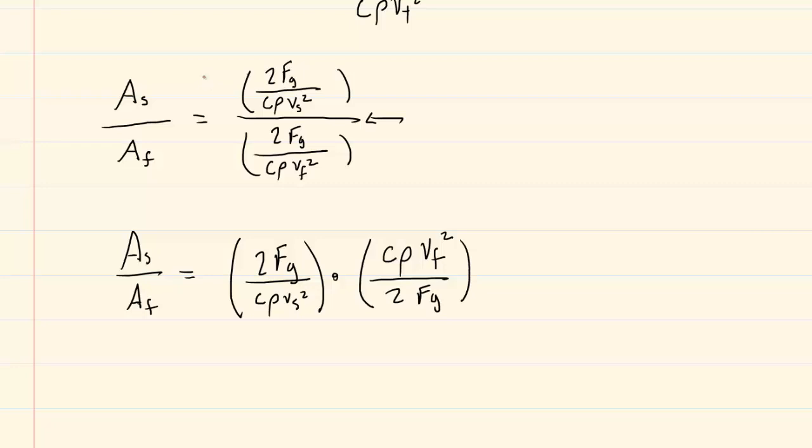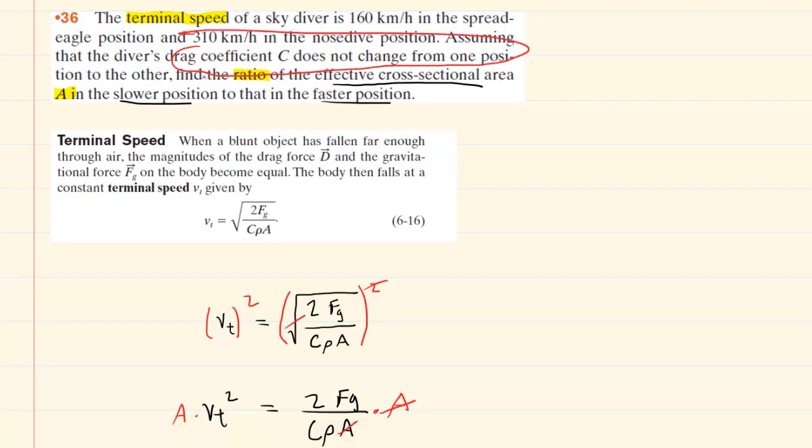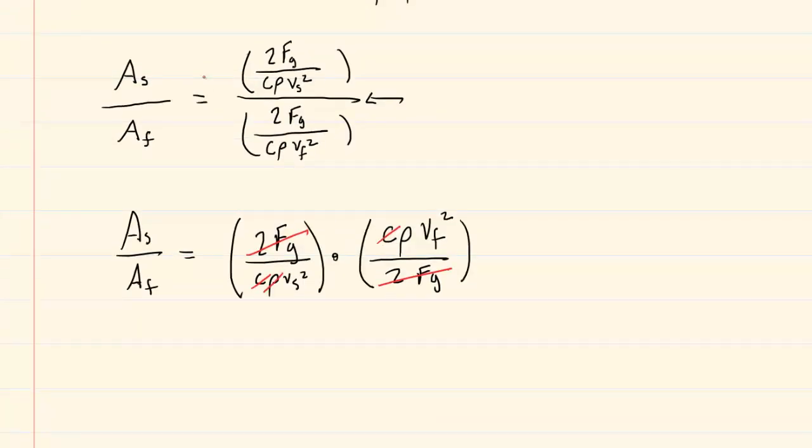If you look at this carefully, you'll see the 2fgs will cancel out. The c values cancel out. You might remember the question noted that the drag coefficient does not change from one position to the other. The density of air would presumably be the same.